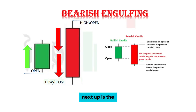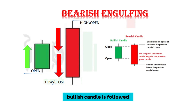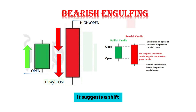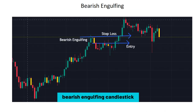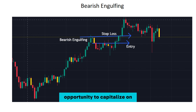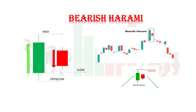Next up is the bearish engulfing pattern — a reversal signal. It occurs when a small bullish candle is followed by a larger bearish candle that completely engulfs the previous one, suggesting a shift from bullish to bearish momentum. Traders often keep an eye out for this pattern as it can signal a potential trend reversal, offering an opportunity to capitalize on the emerging downtrend.